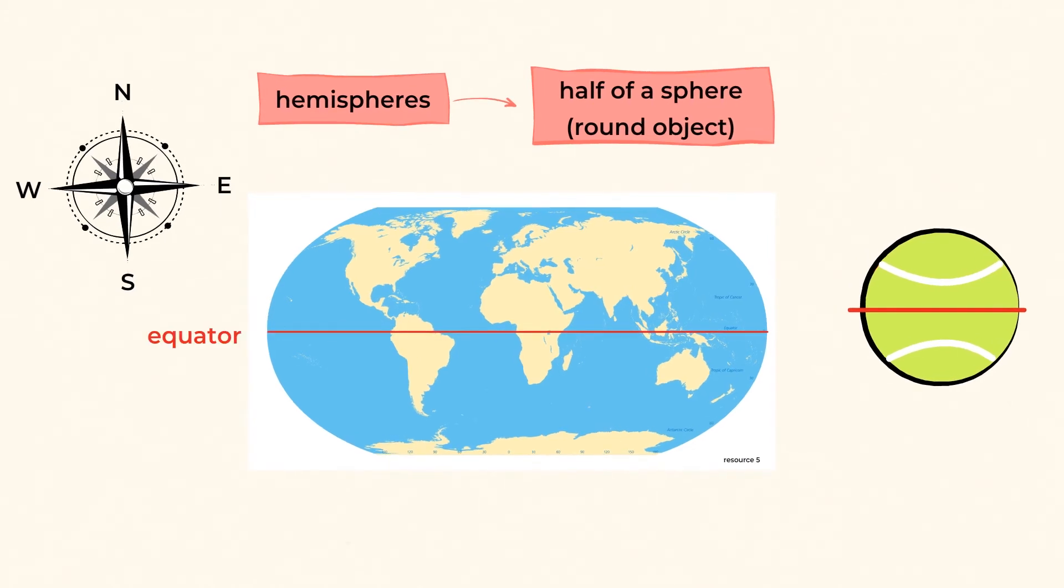The equator is an imaginary line that splits the Earth into North and South hemispheres. Places above the equator are in the Northern hemisphere, and places below the equator are in the Southern hemisphere.